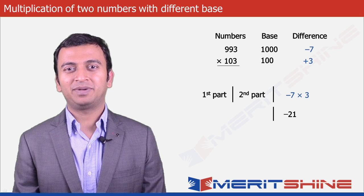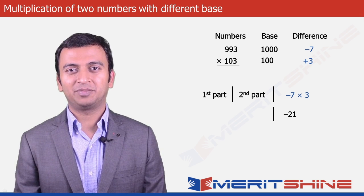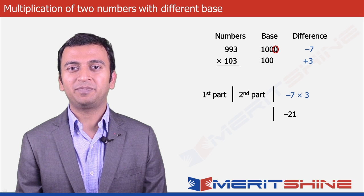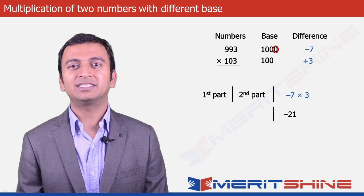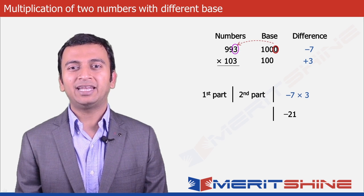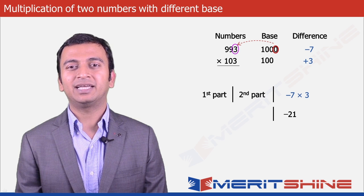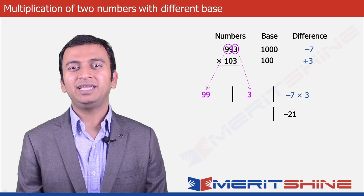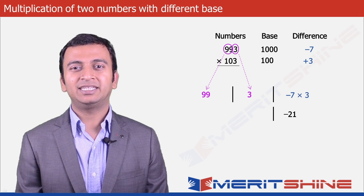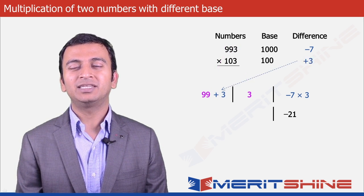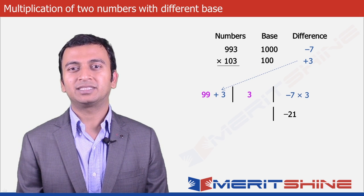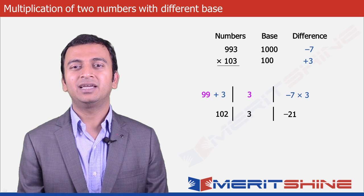To obtain our second part, we will take the larger number and take as many digits from the right as is the difference in the number of zeros of our bases, which in our case is 3 minus 2 = 1. So 993 will be split as 99 and 3. The value 3 would come in the second part, and 99 would form the first part along with the difference obtained from the second number, which is plus 3, making it 99 plus 3 = 102.